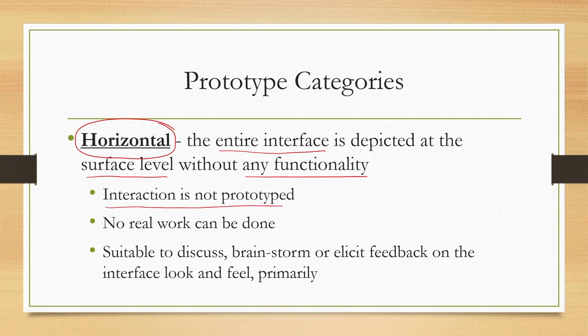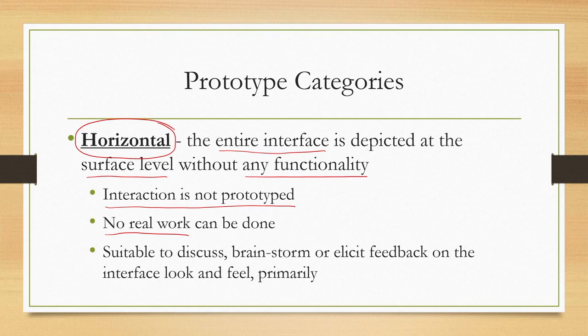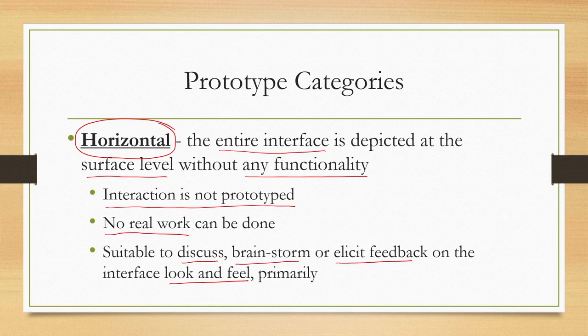Since we are not implementing any functionality in horizontal prototypes, we cannot interactively perform any task. These are primarily suitable to discuss, brainstorm, or elicit feedback on the interface look and feel. The primary purpose is to get feedback or test the look and feel of the proposed design, and that is what we can achieve with horizontal prototypes.